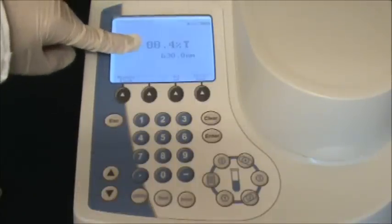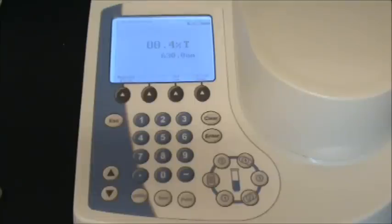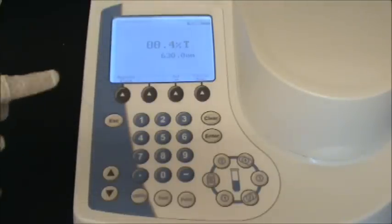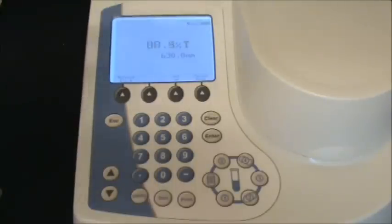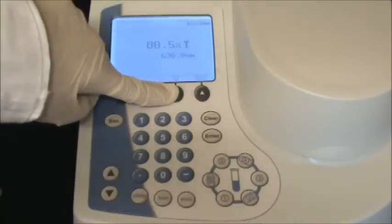You also have in the center of the screen the actual reading that will be taken. Until you measure the blank, you won't get accurate readings here. At the bottom is where you set which wavelength you want to take your measurement at. To change it, hit the button that says set nanometers.